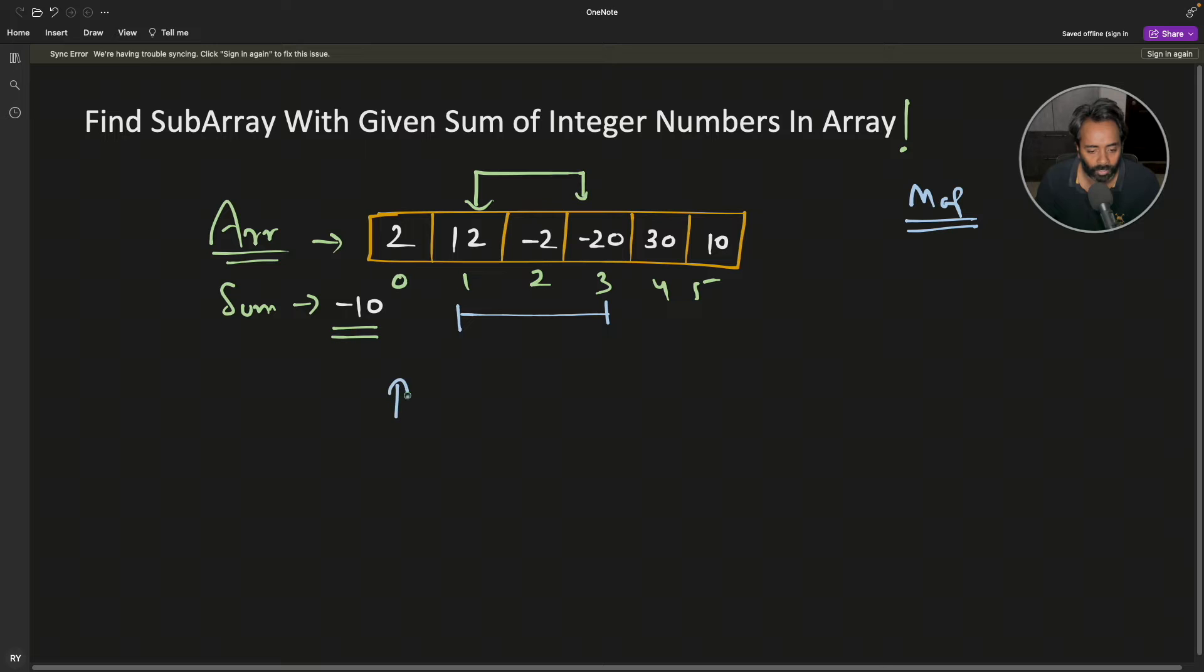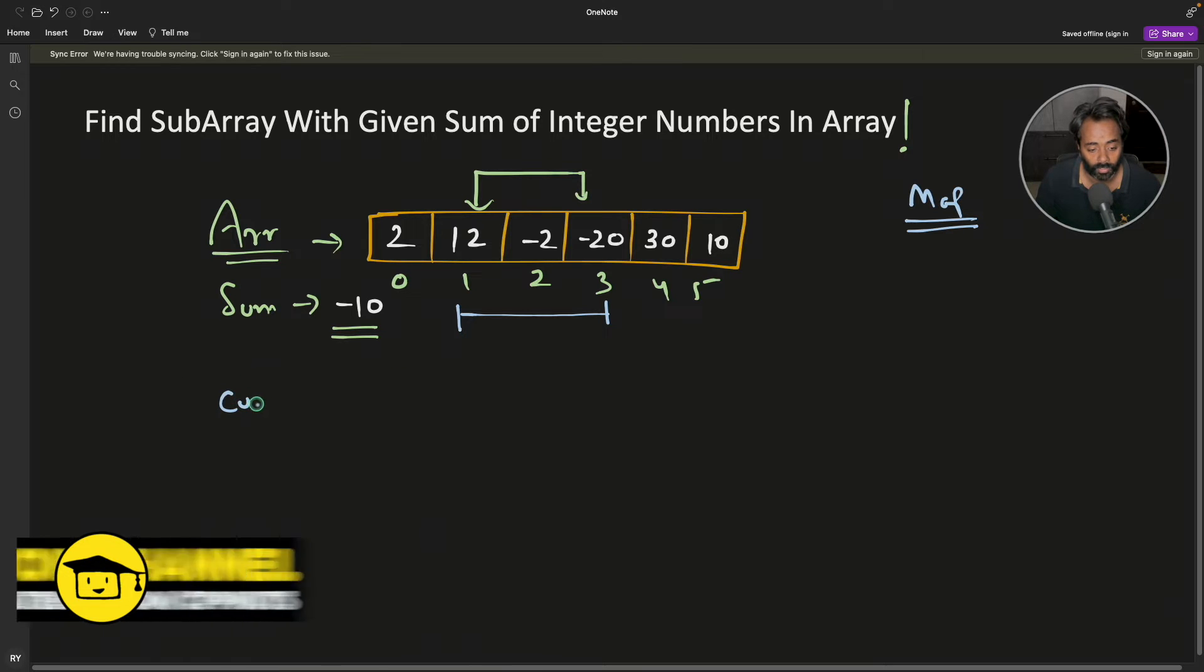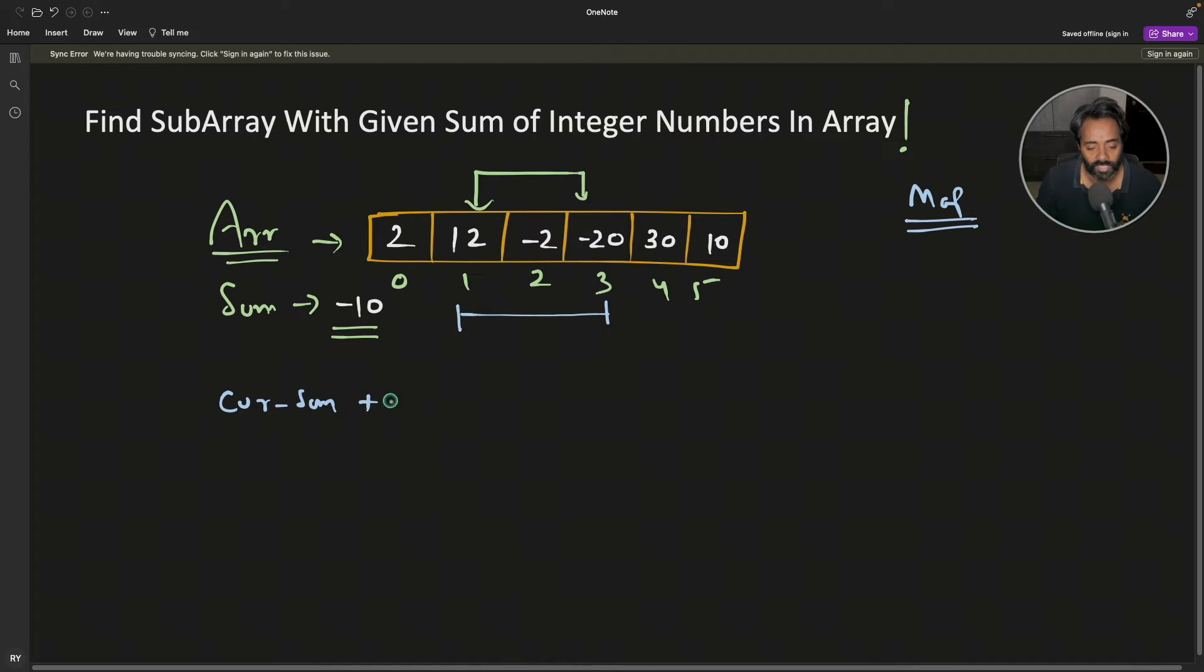We will start from the beginning, from here. Draw this imaginary line. We'll start from here and keep adding the subsequent numbers. We'll call that current_sum. That is going to be current_sum += arr[i]. We'll keep doing this in the for loop.